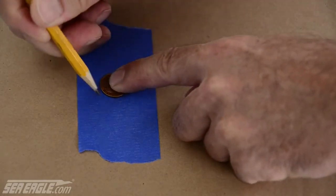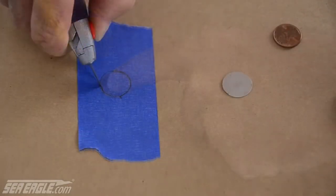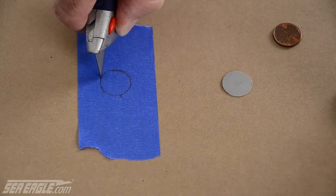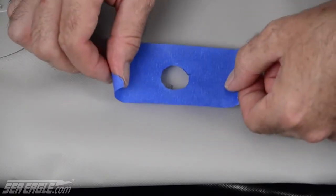Here's a pro tip for a super clean patch. Cut out a corresponding hole in a piece of masking tape and place the tape over the hole.